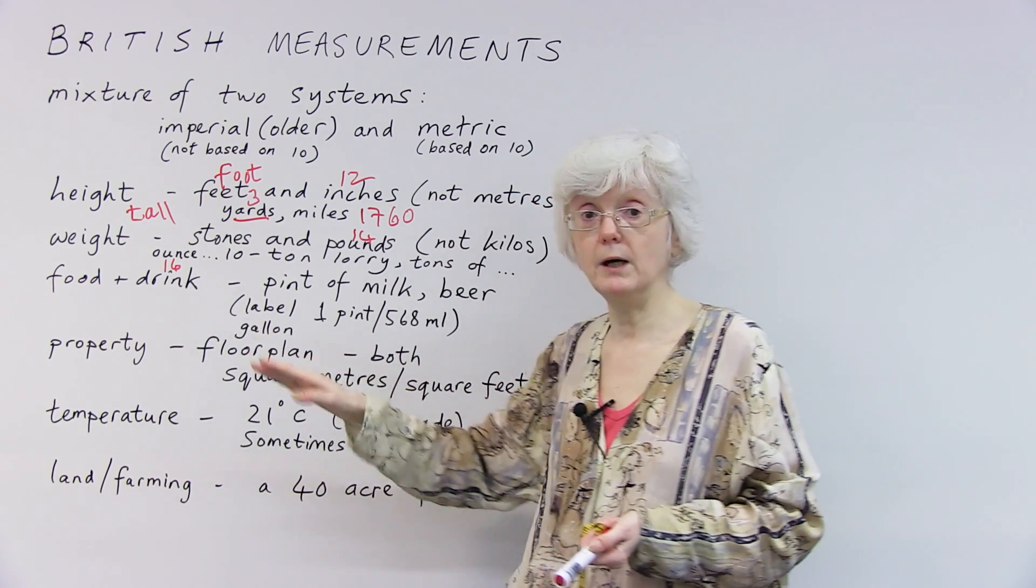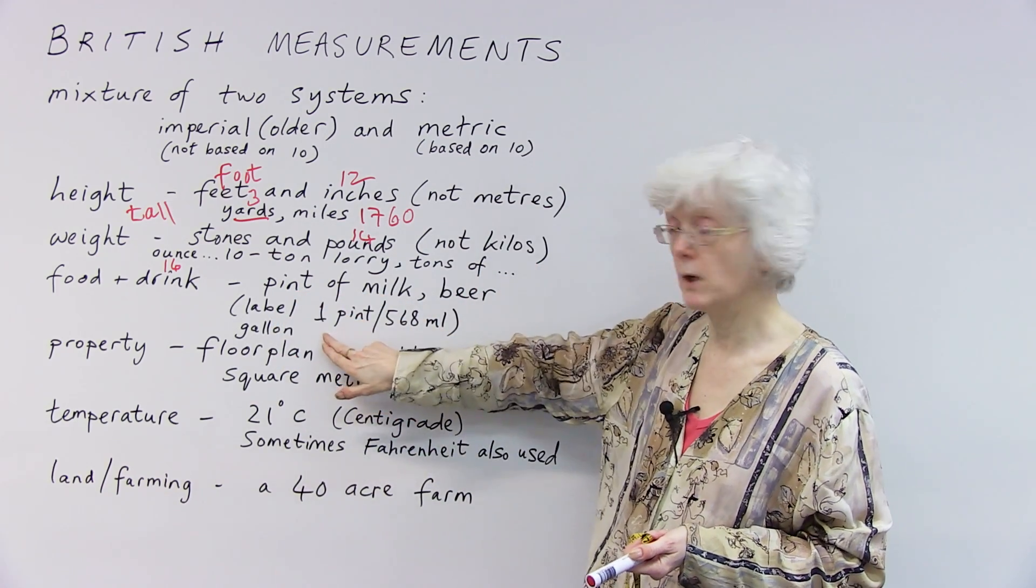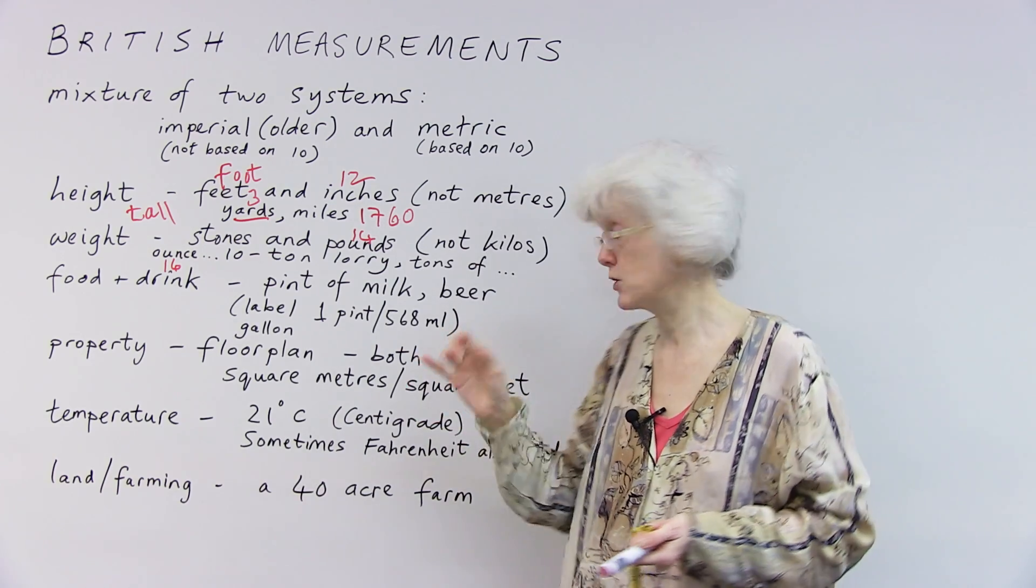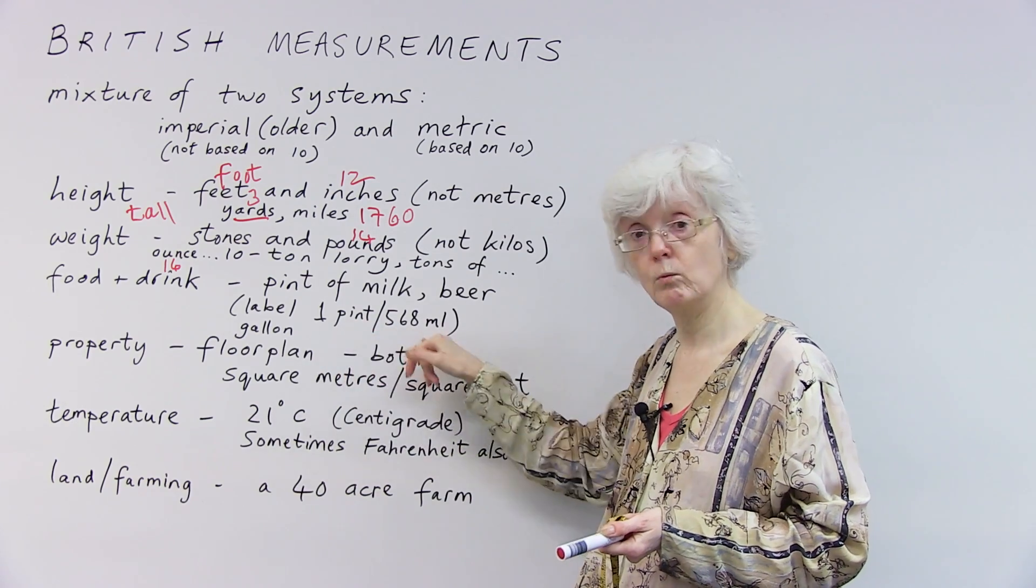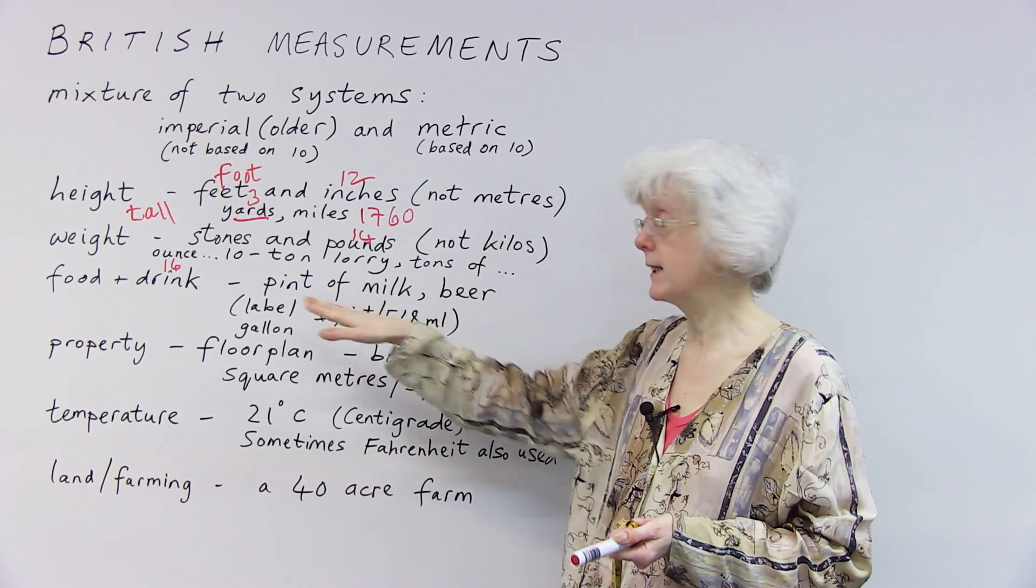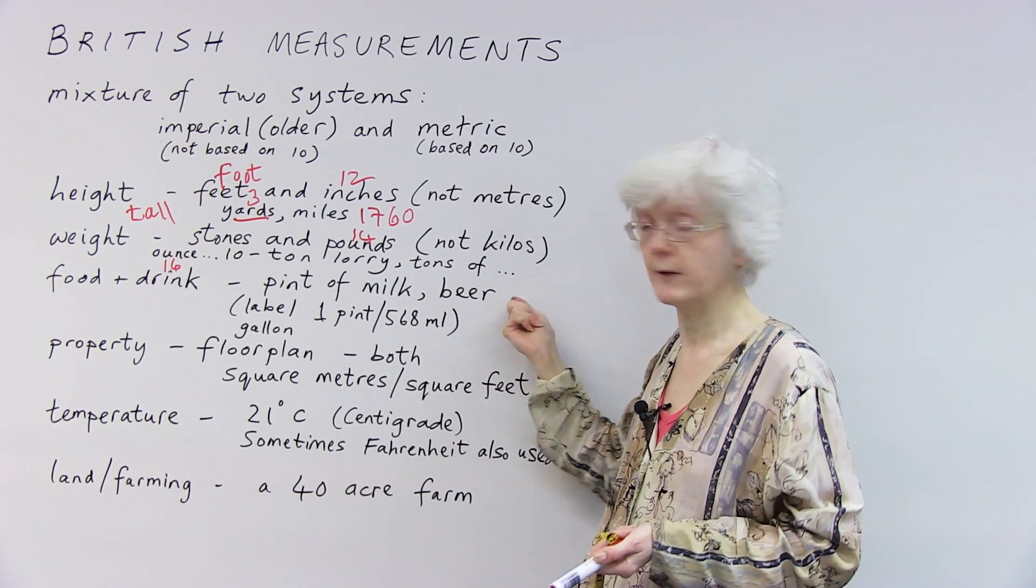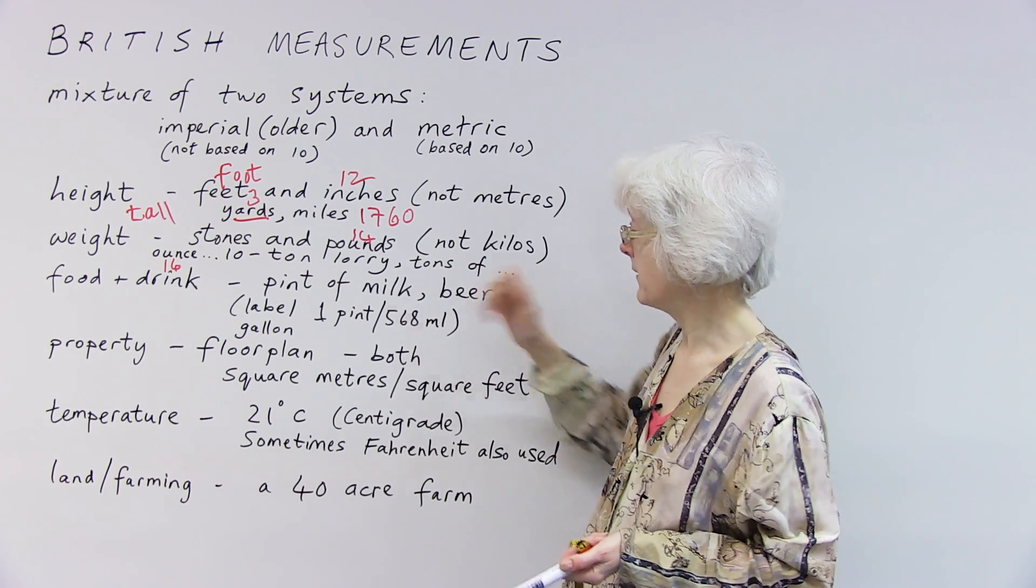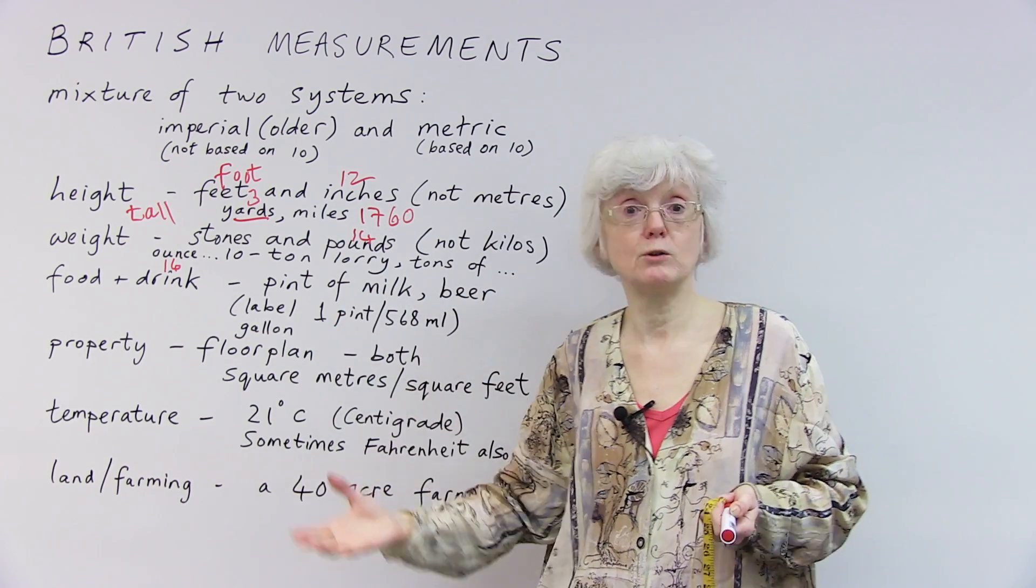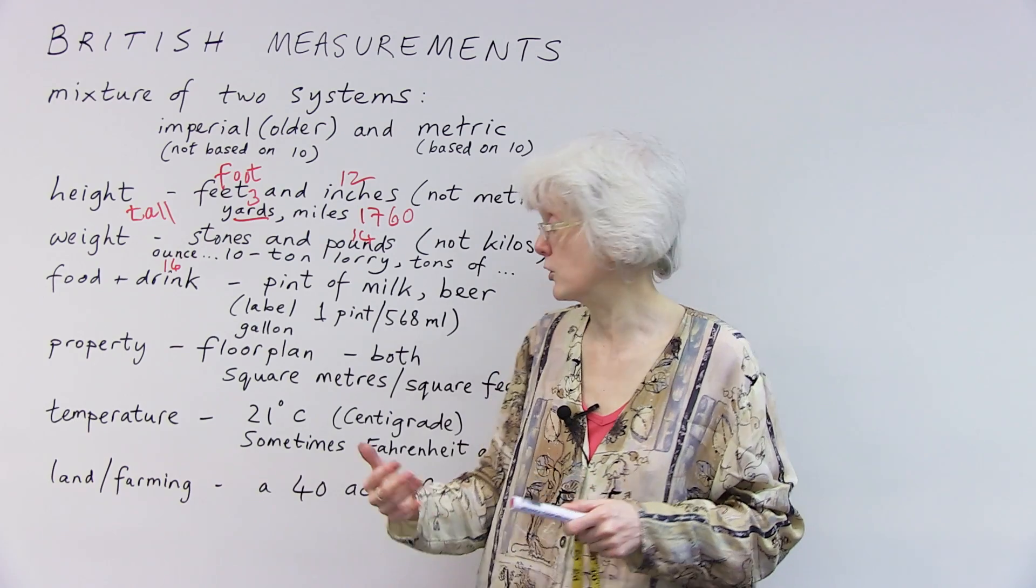Moving on to food and drink. If you buy a pint of milk in the supermarket, it's called a pint, pint of milk. But on the label, it says one pint, 568 millilitres, because the liter is the liquid measurement in the metric system. So when you buy food and drink, you tend to have the label with both measurements on. But it's still a pint that you buy, a pint of milk. You also, if you go into a pub or a bar, you buy a pint of beer or half a pint of beer. So that's still the old measurement. There is a larger liquid measurement as well from the imperial system called a gallon. And people used to buy their petrol for their cars in gallons, but I think they now buy it in liters instead. So that has changed.